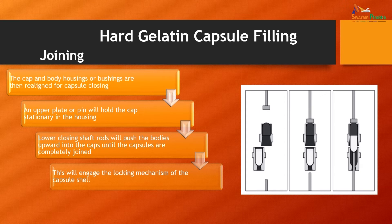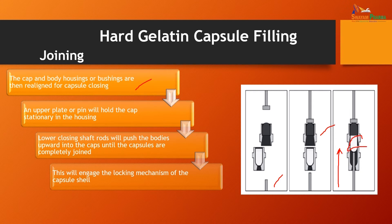After rectification, separation, and filling, the next step is joining. The cap and body housing are realigned for capsule closing. An upper plate or pin holds the cap stationary in the housing, while lower closing shaft rods push the bodies upward into the cap until the capsules are completely joined, engaging the locking mechanism of the capsule.